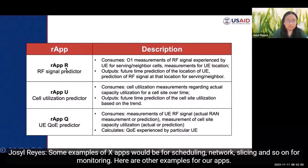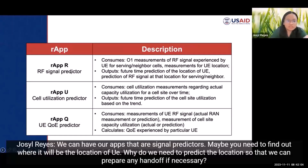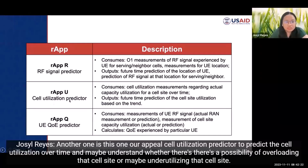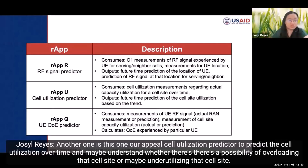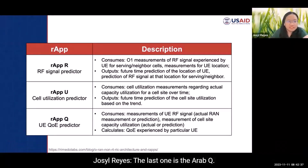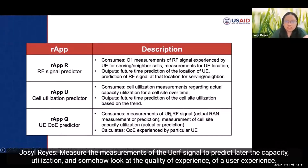Here are other examples for rApps. One is a signal predictor — used to find out the future location of a UE so that we can prepare any handoff if necessary. Another is a cell utilization predictor, which predicts cell utilization over time to understand whether there is a possibility of overloading or underutilizing a cell site. The last one is the RUPQ, which measures UE RF signal to later predict capacity utilization and assess the quality of experience of a user.